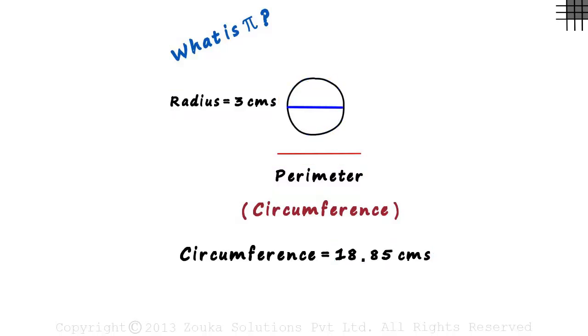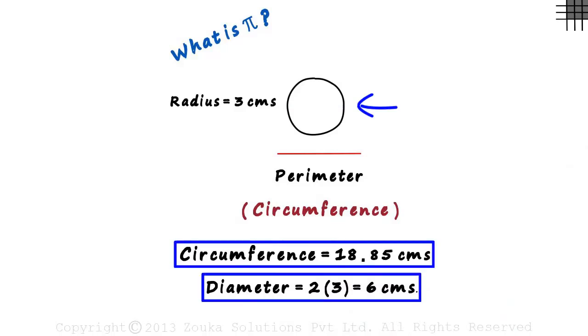Let's also note the diameter of the circle. The diameter of a circle is 2 times its radius. So the diameter will be 2 multiplied by 3 which equals 6 cm. For this circle, these are the values we have for circumference and the diameter.